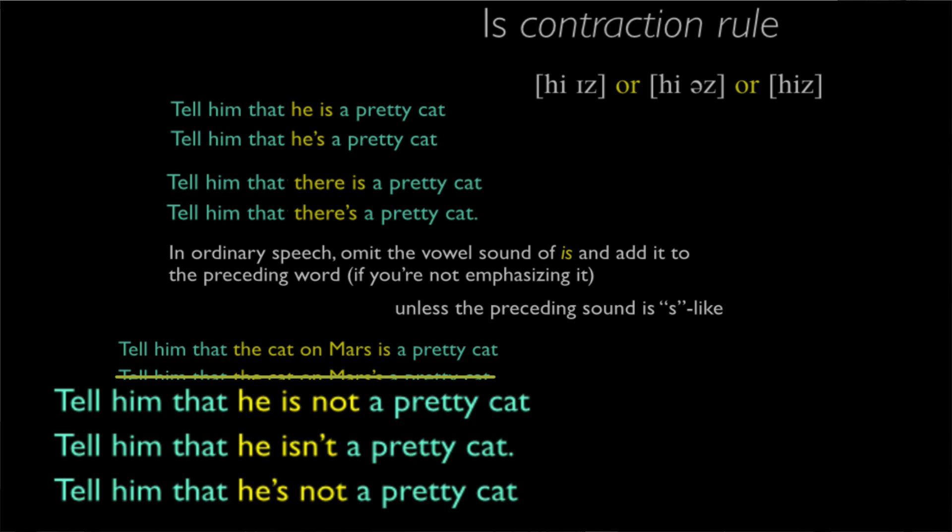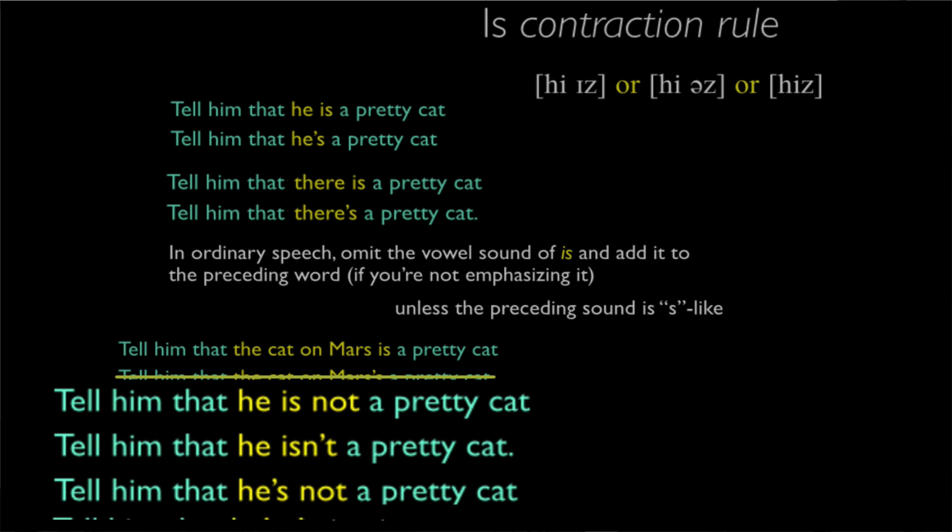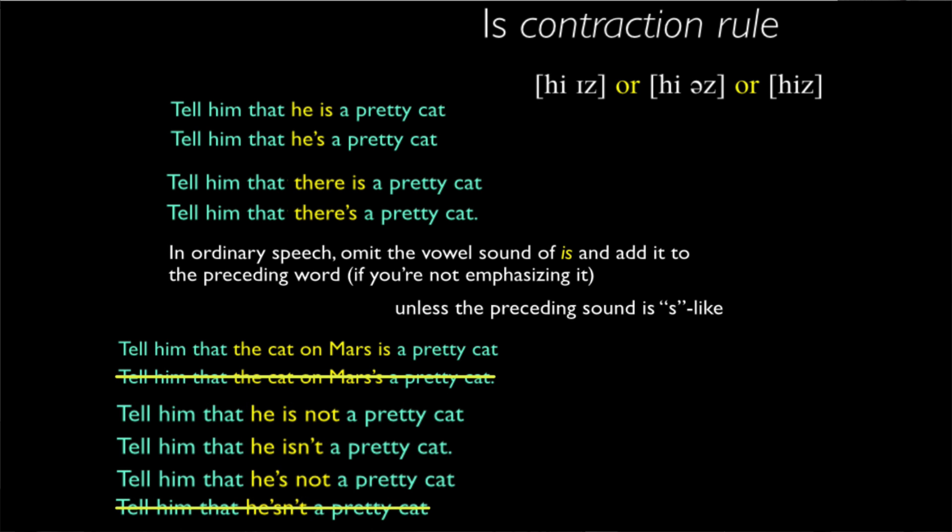But if we apply the 'not' contraction rule, we don't lose the context in which the vowel of 'is' can be deleted. But we cannot in fact contract 'is' once 'n't' has been added to it, as it's not okay to say, 'tell him that he isn't a pretty cat.'